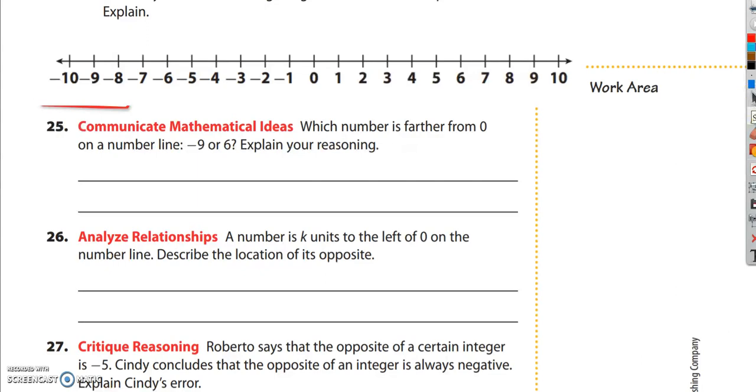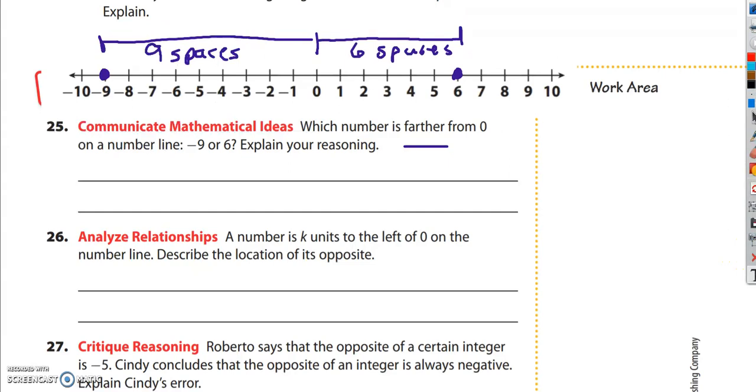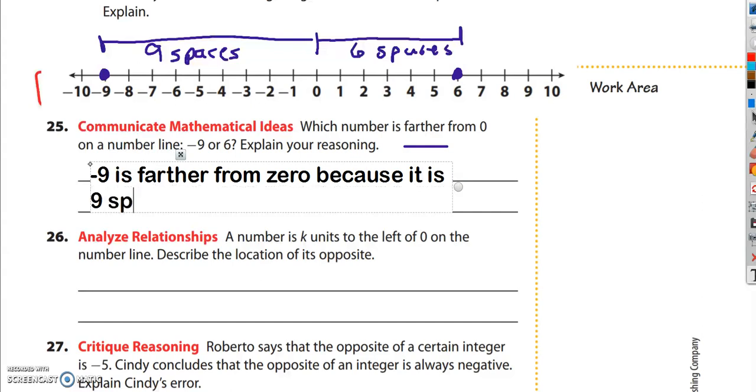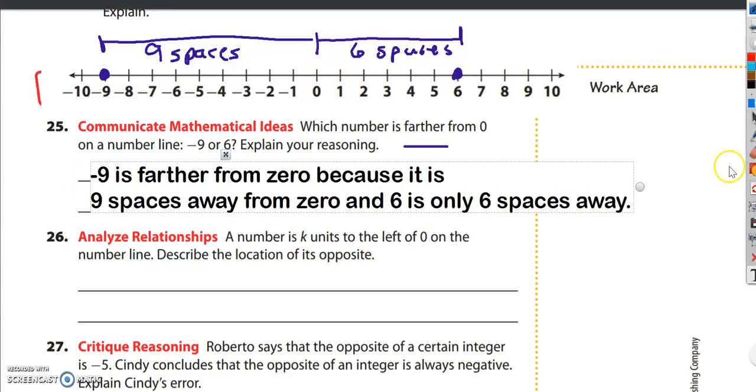Once again, if you use a number line, it's going to be pretty easy. If you put negative 9 right here, you put 6 right here, and you simply ask yourself, which one of those is farther from 0? To get from 0 to 6 is 6 spaces. And to get from 0 to negative 9, that's going to be 9 spaces. Some kids would argue and say, well that's negative 9 spaces. But there's no such thing as a negative space. Whether you're counting to the left or to the right, there's still spaces.